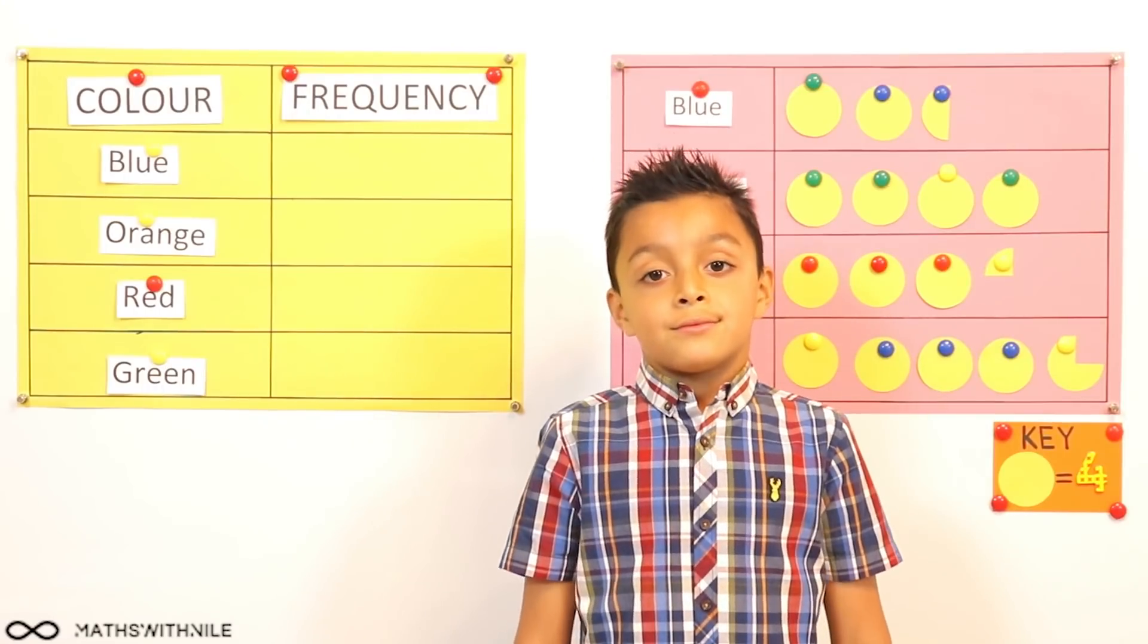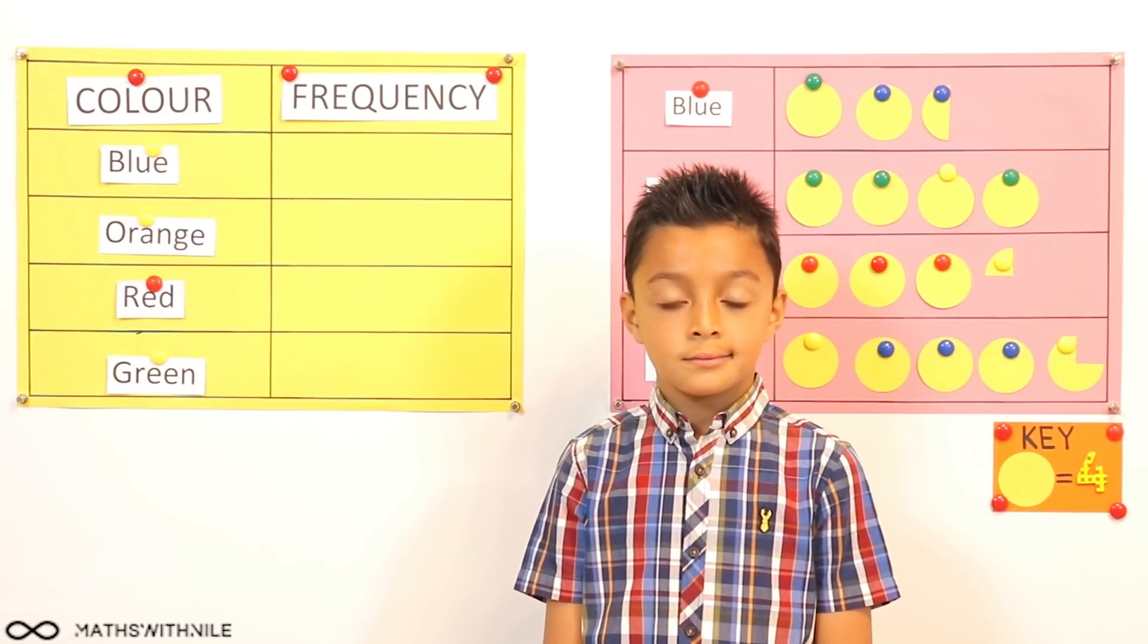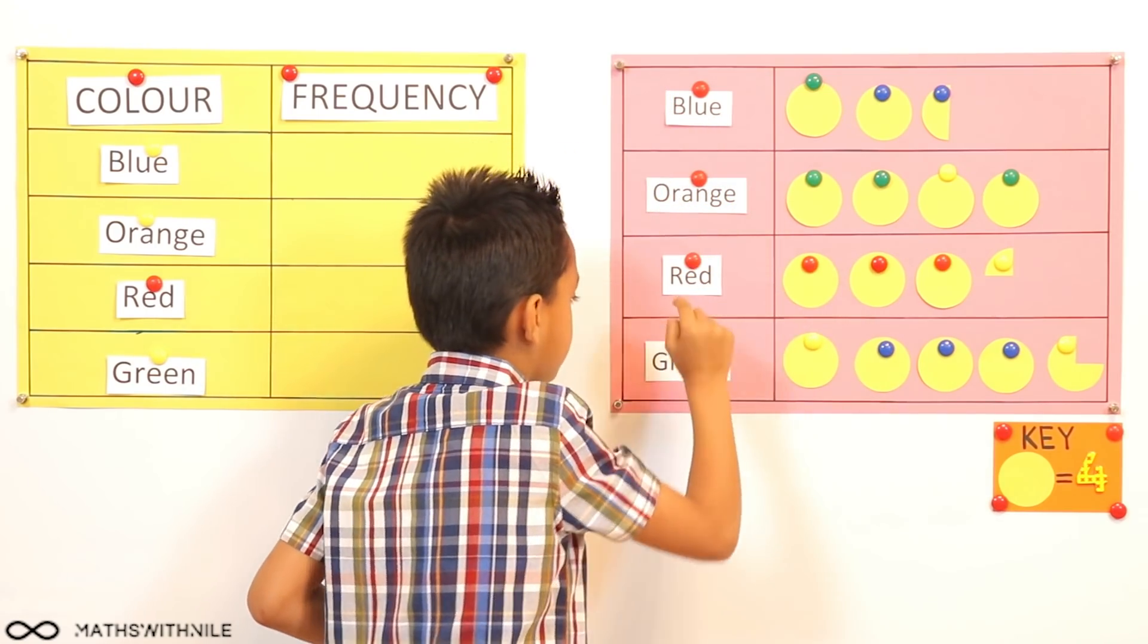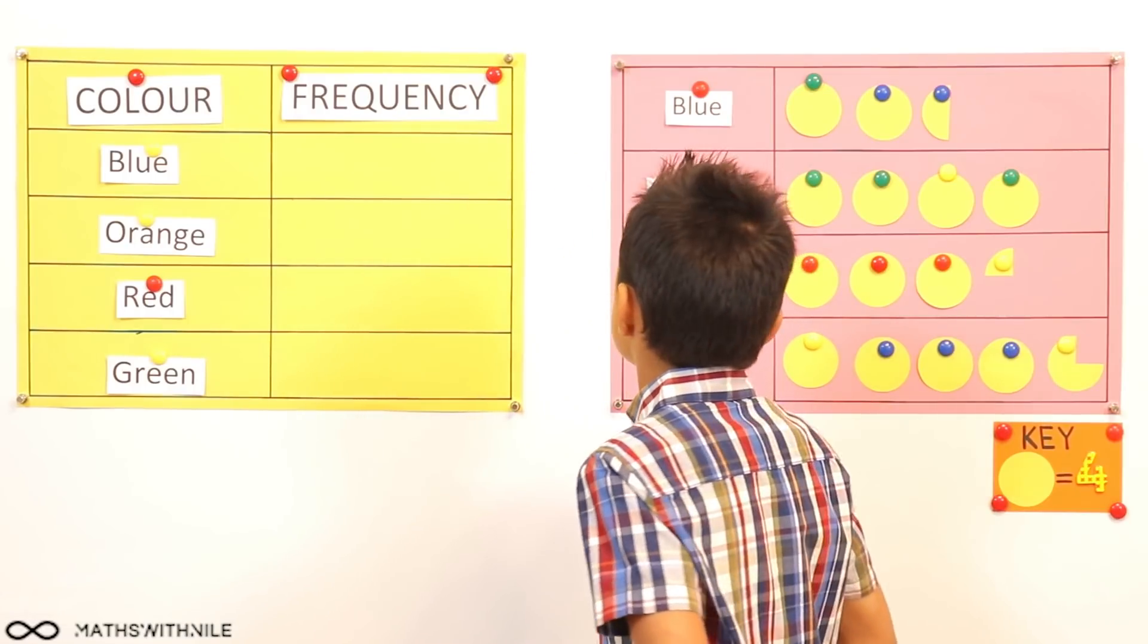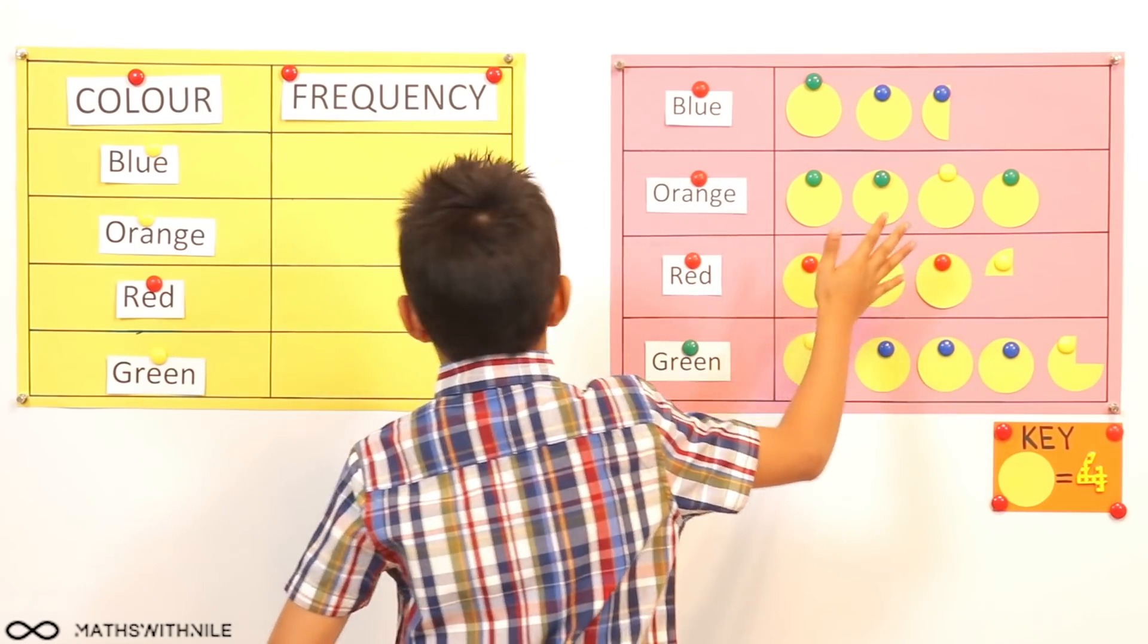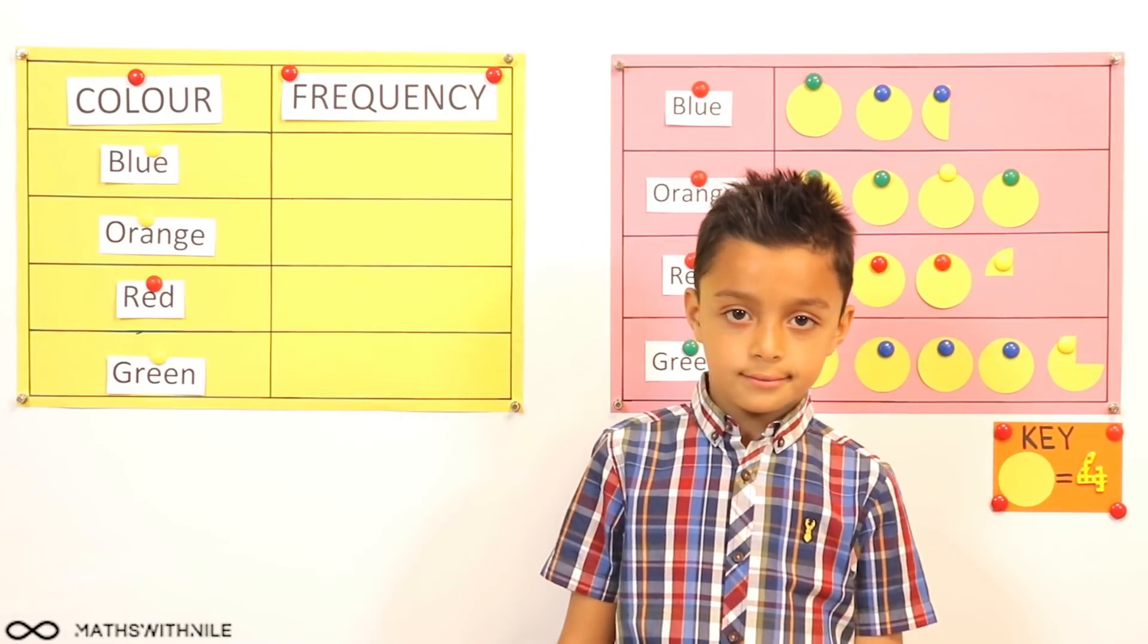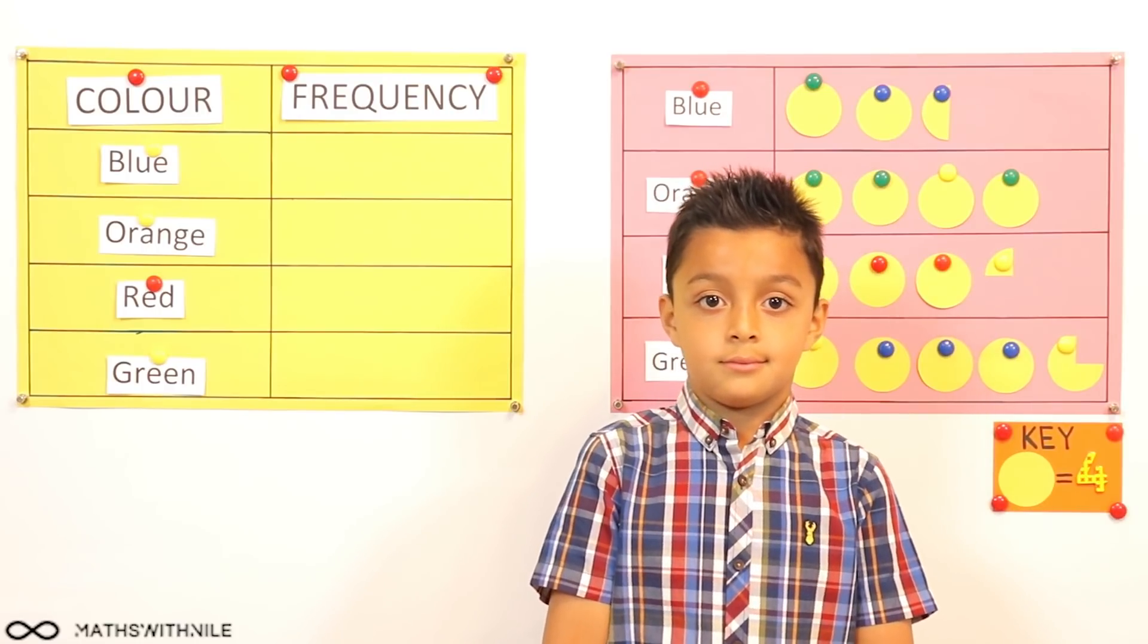Are you ready for question two? Yes. This one is about the different colored sweets in a packet of sweets. So what colors can you see in the table? Blue, orange, red and green. Okay. And what's the difference between this question and the previous one? The pictogram is filled out and the frequency isn't. Okay, so we're going to be working out the frequency, how many of each color sweet we've got in the pack.